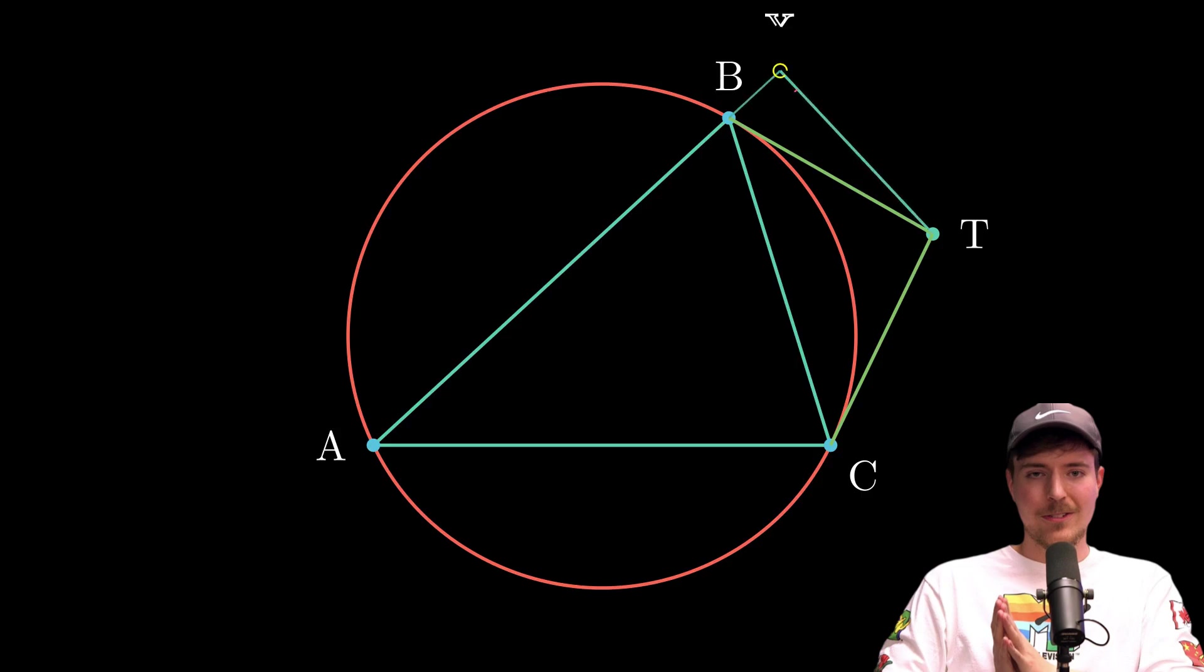Now we're going to drop some perpendiculars from T onto the line AB. We call it X. The line AC, we call it Y. And line BC, we call it P. Here's the challenge. We've got to show that this point P, it's not just any point, it's the orthocenter of triangle AXY.